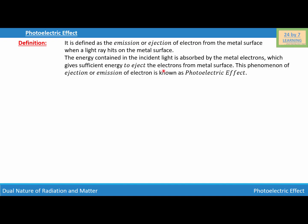In other words, we can say that when a light ray hits the metal surface and the metal surface receives the sufficient amount of energy, which is basically a minimum amount of energy that a metal needs to eject an electron, then the electrons are ejected from the metal surface, and this whole phenomenon is known as photoelectric effect.